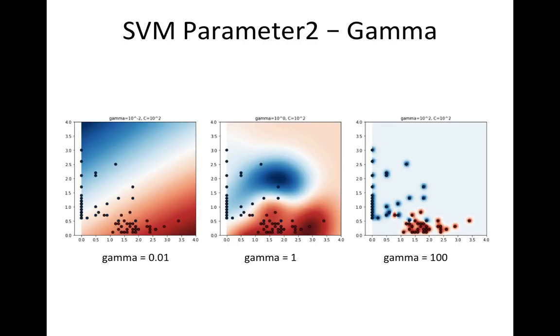If you use RBF kernel SVM, the second parameter you must decide is gamma. The gamma parameter defines how far the influence of a single training data reaches. For example, low gamma, which reaches further like the leftmost example, and high gamma, which reaches very little like the rightmost example.